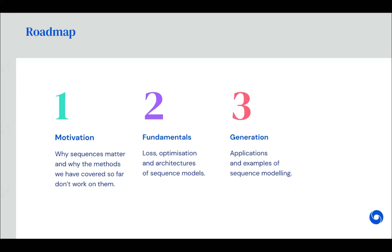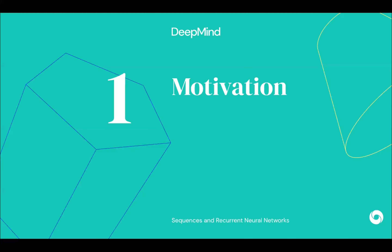Today we will first cover the motivations — why sequences matter and why we should be interested in models like recurrent neural networks. We'll also cover some fundamentals, including the main architectures used for modeling sequences, mainly focusing on RNNs, how to compute the loss, and how to optimize these models. Lastly, we'll cover a couple of examples and applications of sequence modeling, specifically to generate data as well.